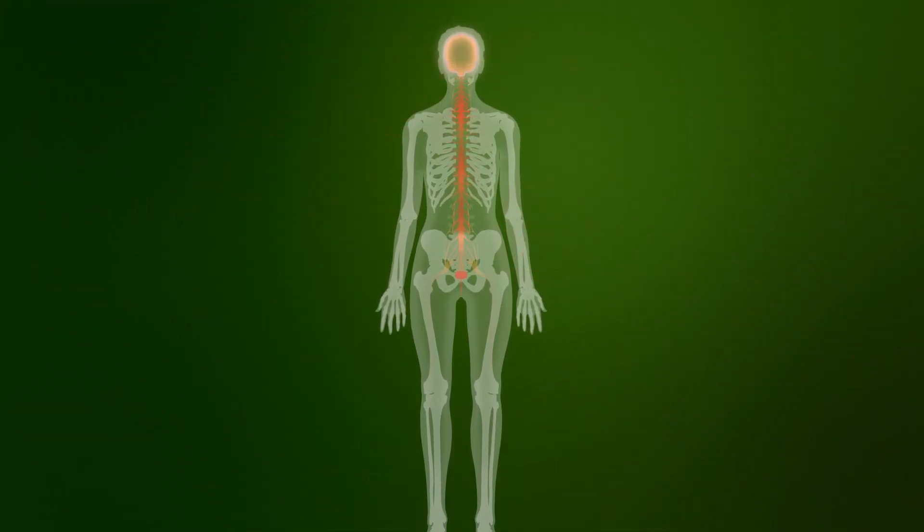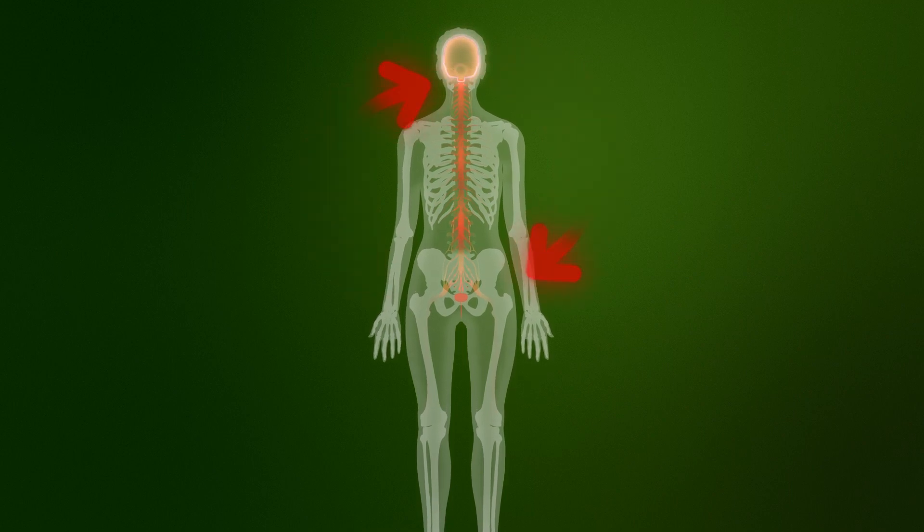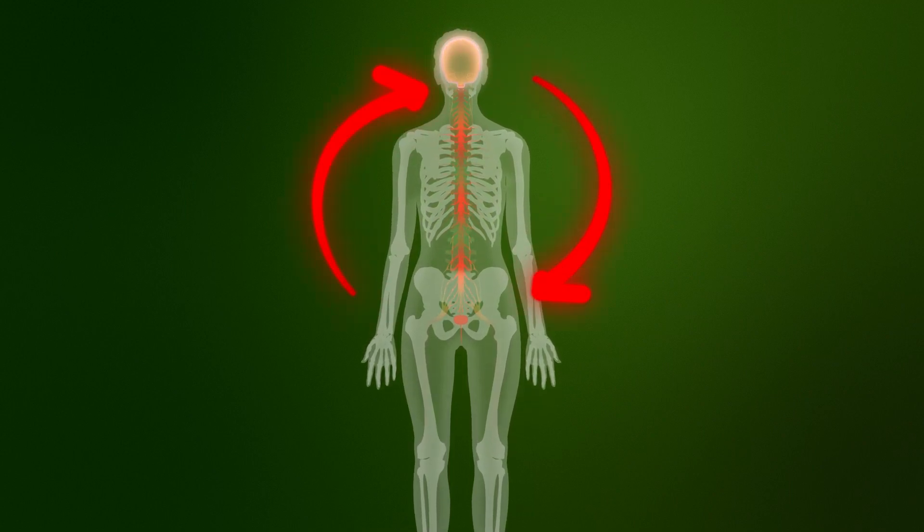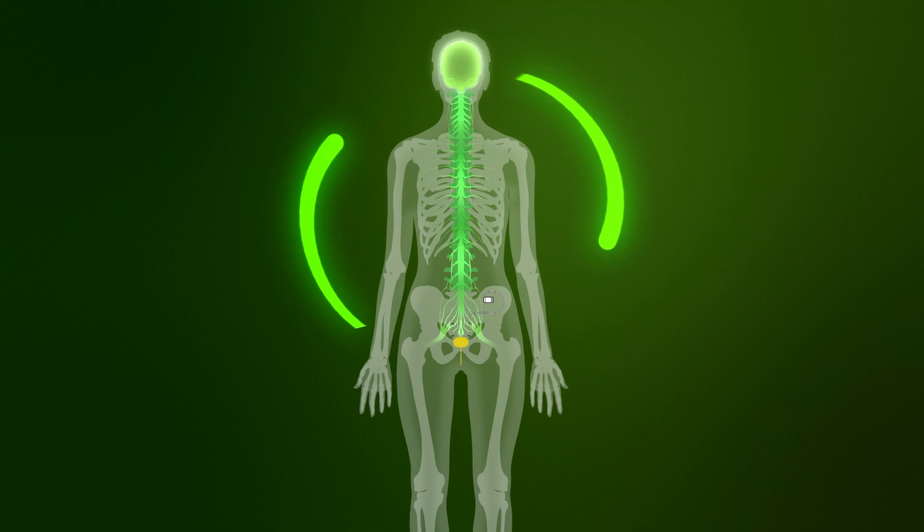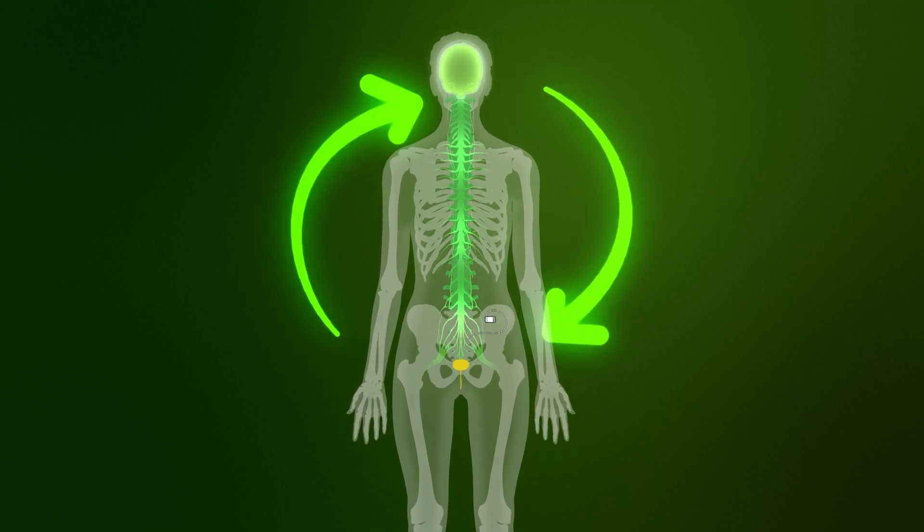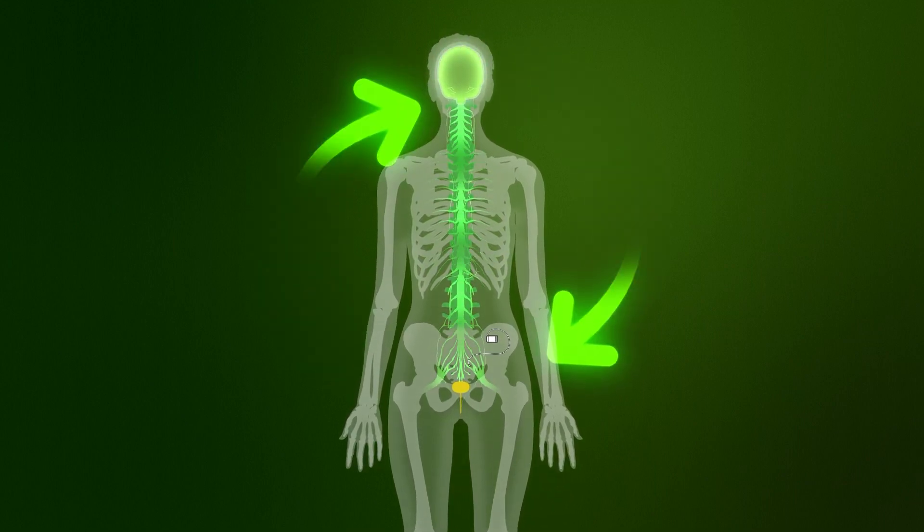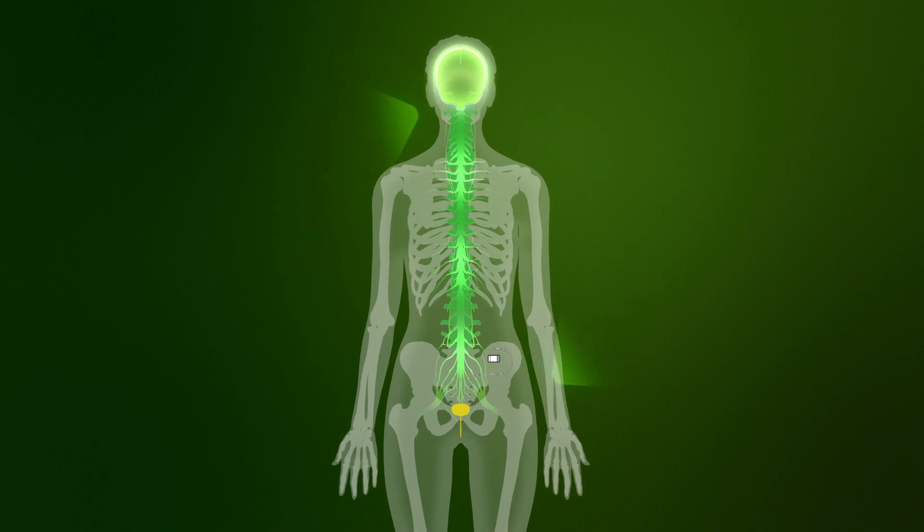Bladder and bowel incontinence symptoms may be caused by abnormal signals between the brain and the bladder or bowel. Exonix SNM therapy can help regulate these abnormal signals, helping restore normal control of the bladder and bowel.